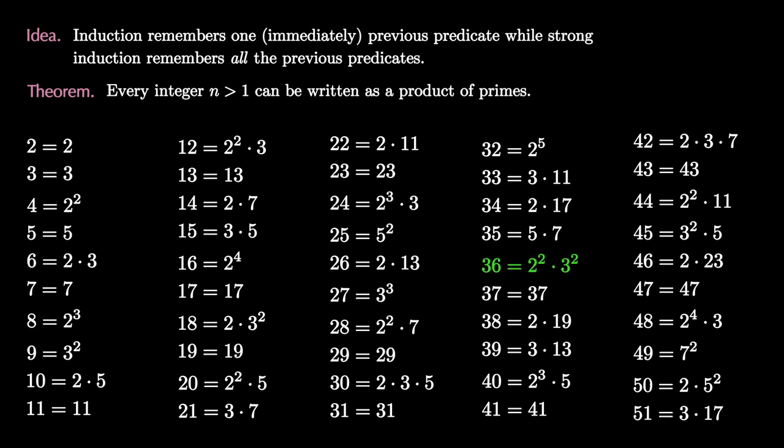If we are using induction, we only have knowledge of the previous value, that 35 equals 5 times 7, but this doesn't give us any information about the prime factorization of 36.